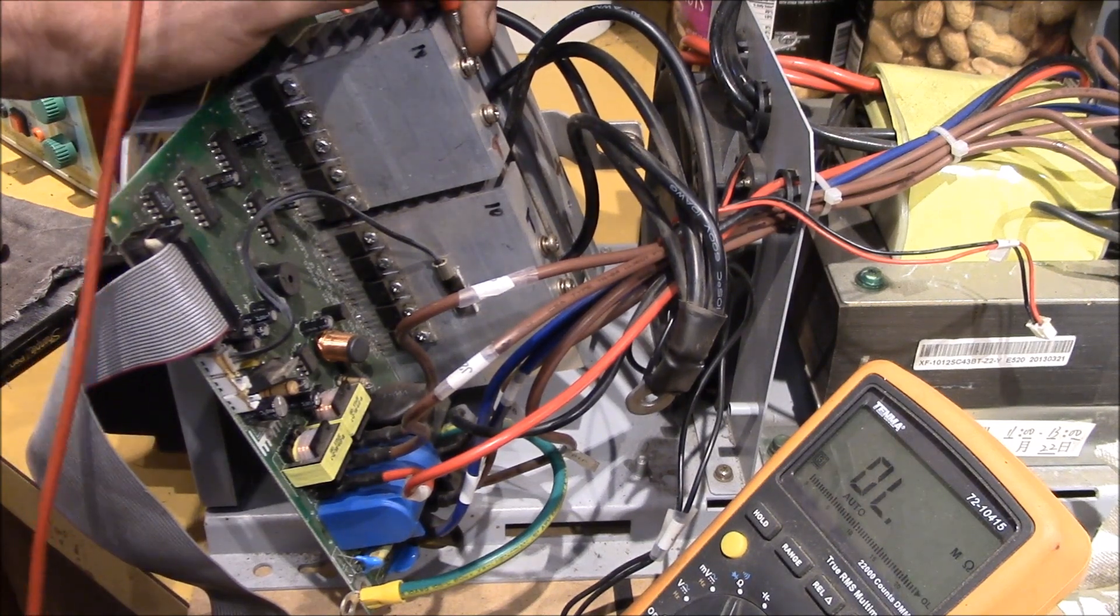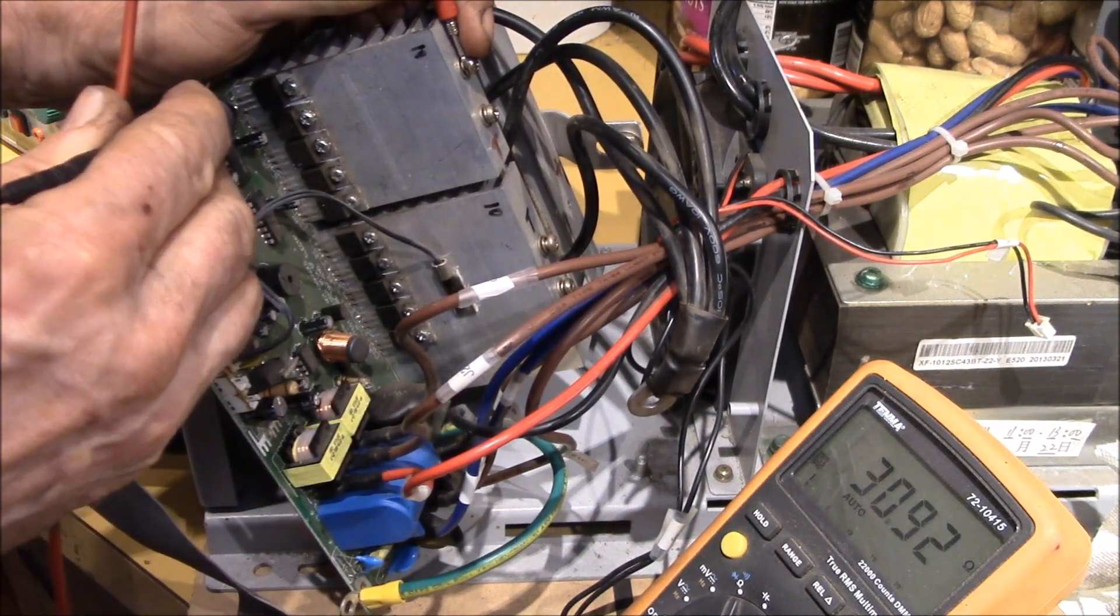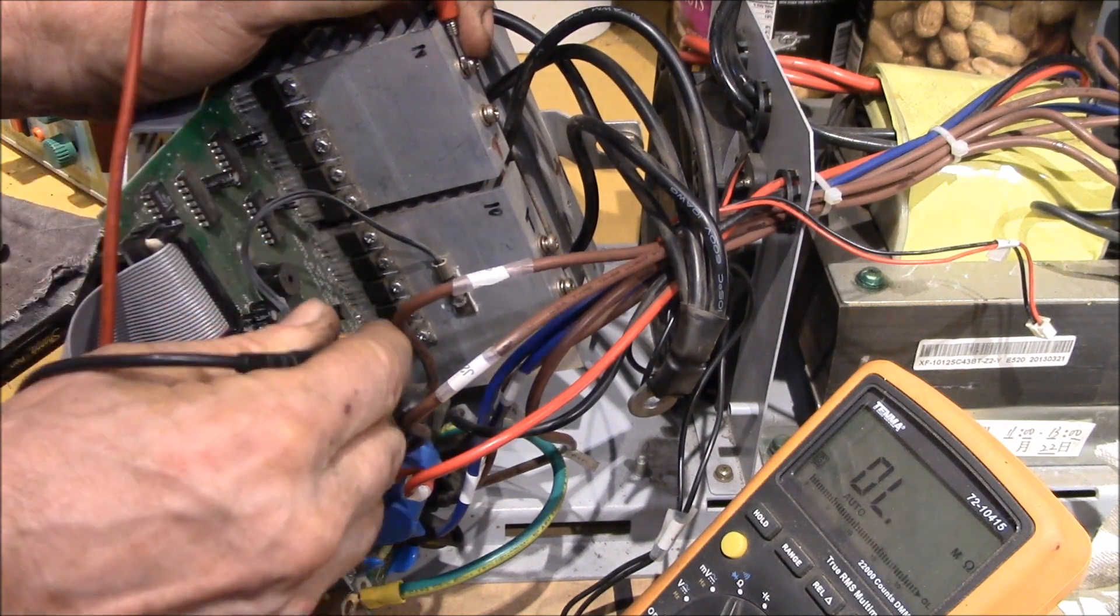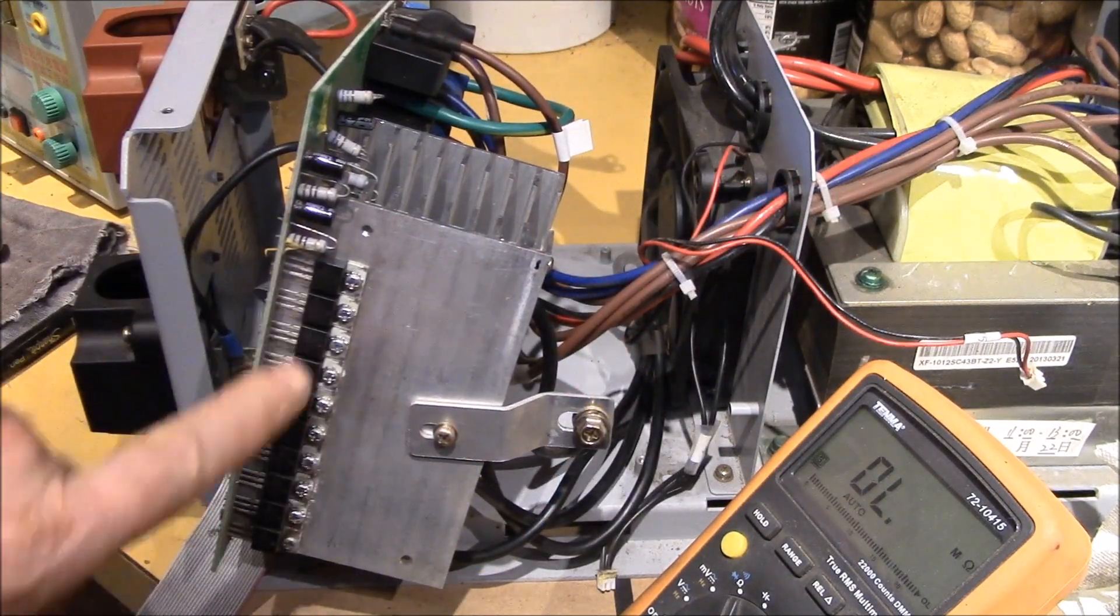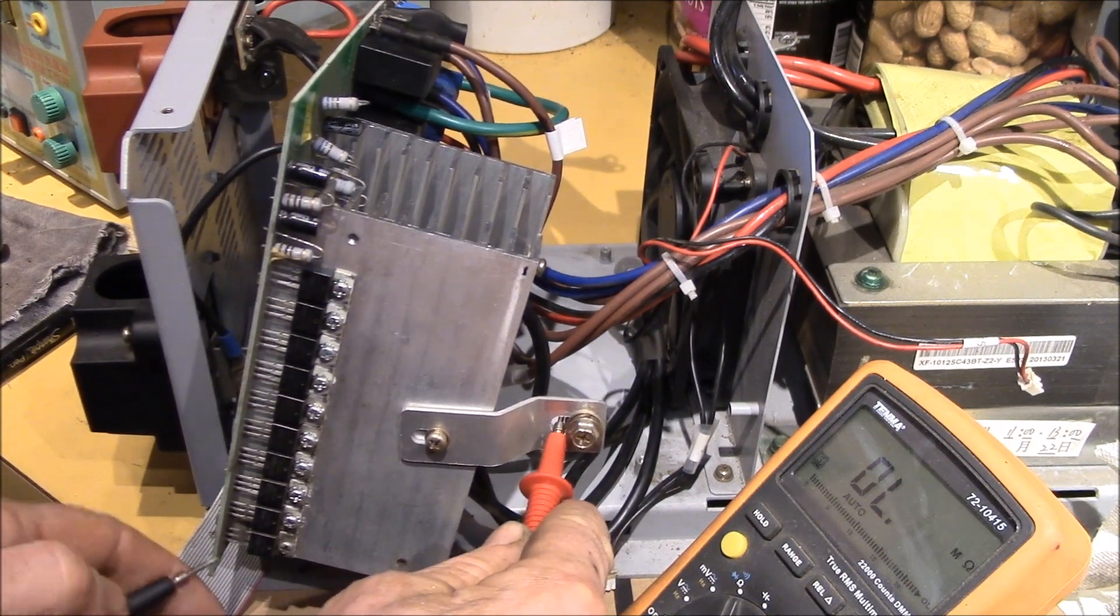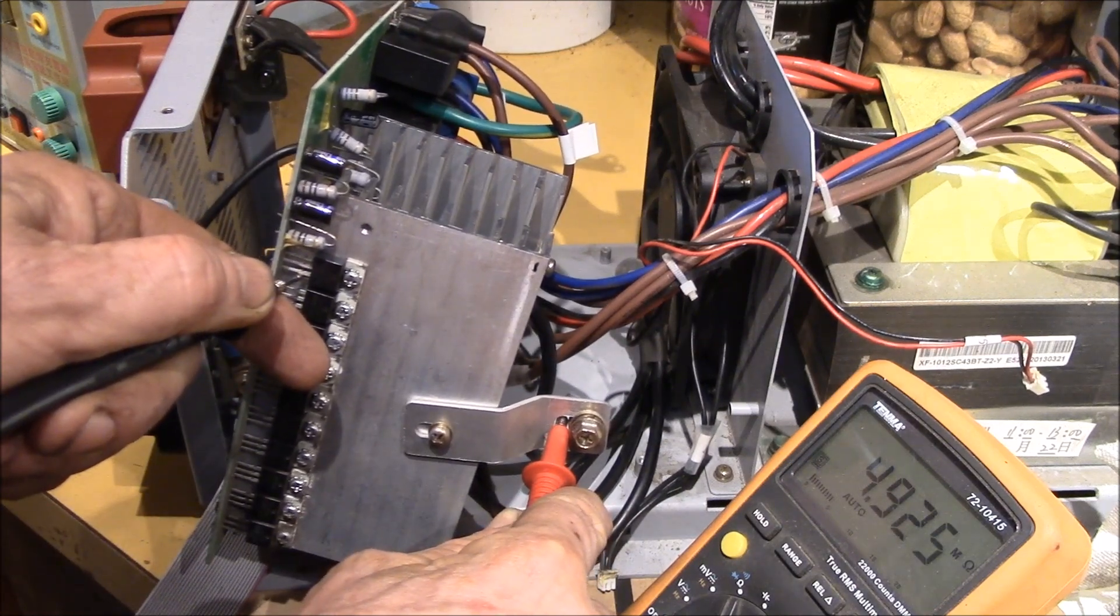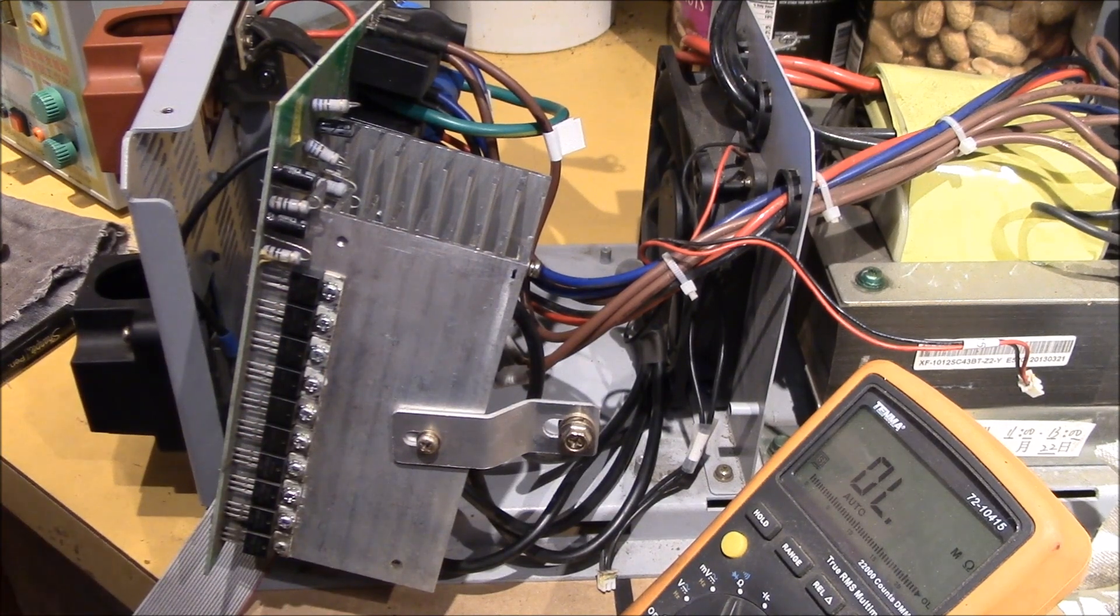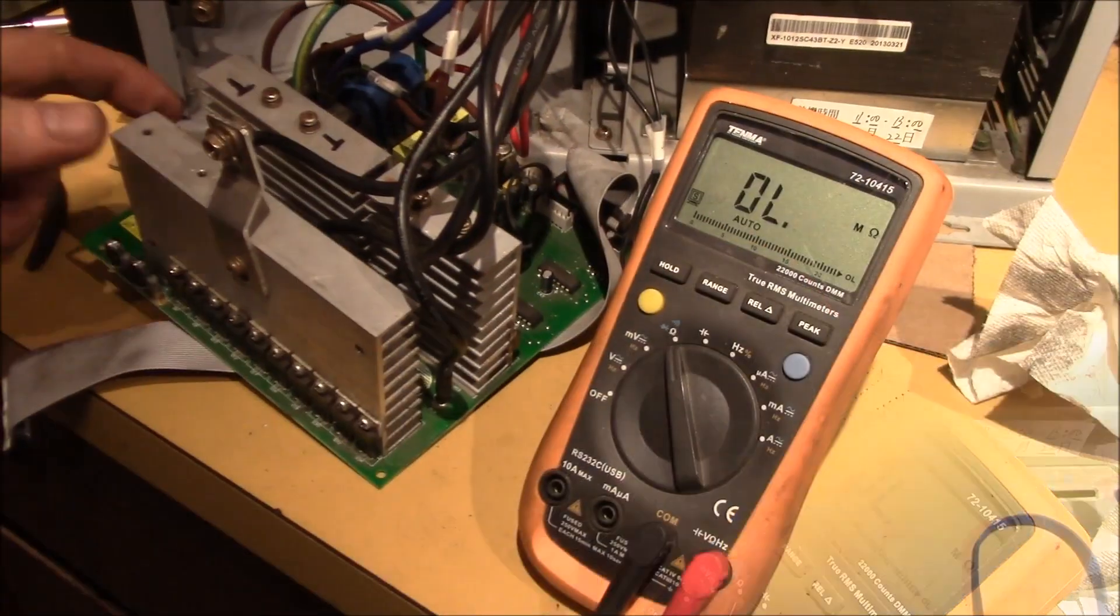So if I come up here on the heat sink, which is tied to all the bodies, and I measure to the source, I'm getting roughly 10k. And I measured the same thing on all 10 of these. So if I do the same thing here, I'm getting about five megs. And all 10 MOSFETs measure out at five mega ohms. So I think everything's good. I don't see anything shorted.